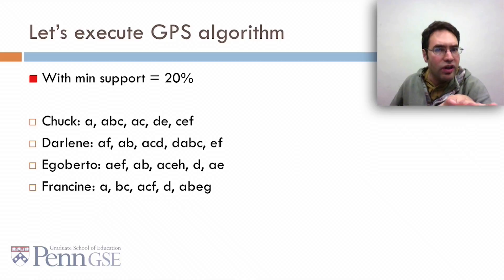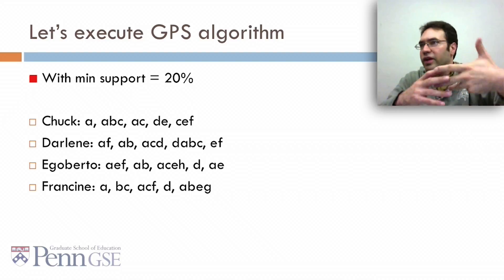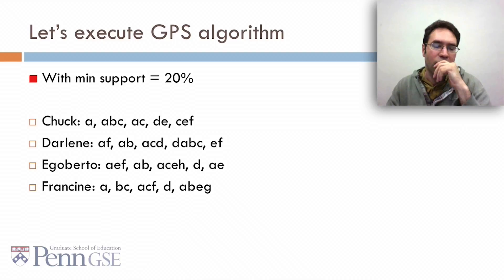Let's execute the GSP algorithm with minimum support of 20%. We have four students who over time have certain patterns of behaviors, which we'll label with letters. A is gaming the system, B is off-task, C is bored, and so on.